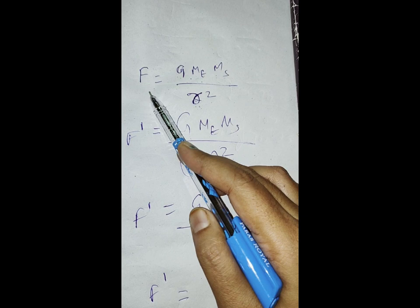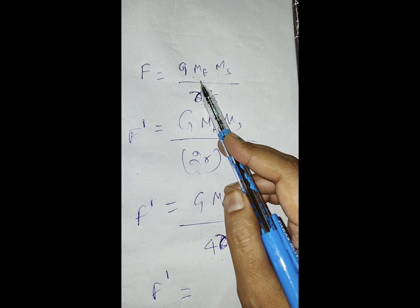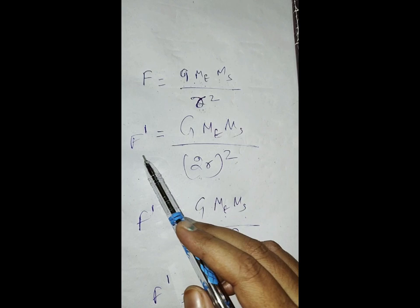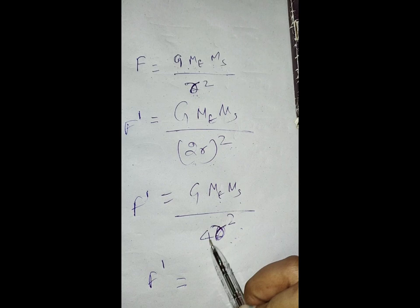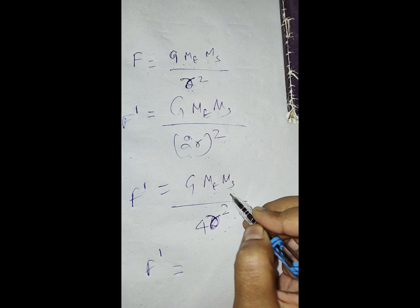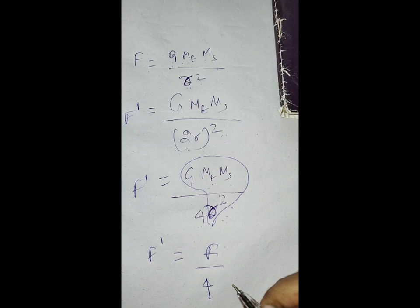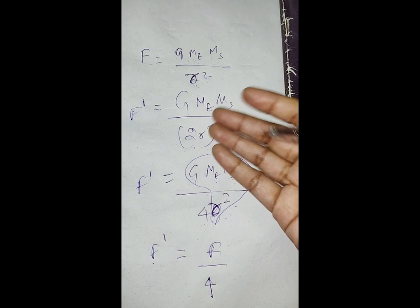Now solving question 2: The formula is F = G·Mₑ·Mₛ / r², where r is the distance between earth and sun. According to the question, the distance is doubled, so F' = G·Mₑ·Mₛ / (2r)² = G·Mₑ·Mₛ / 4r². Since the original F = G·Mₑ·Mₛ / r², we get F' = F/4. The new gravitational force is one-fourth of the previous value.